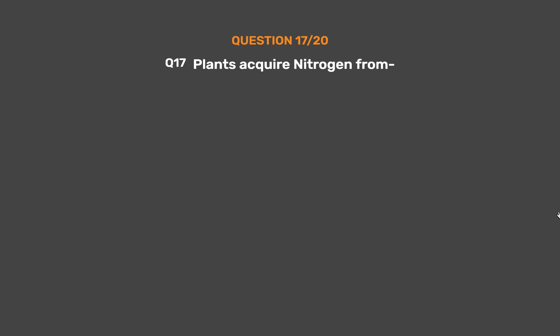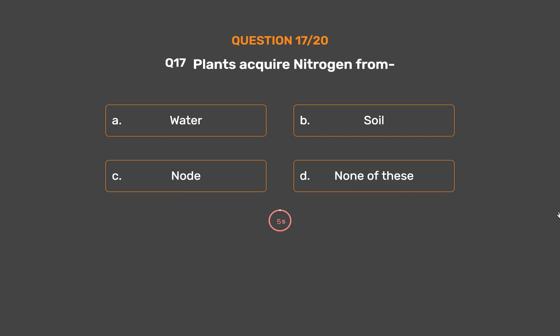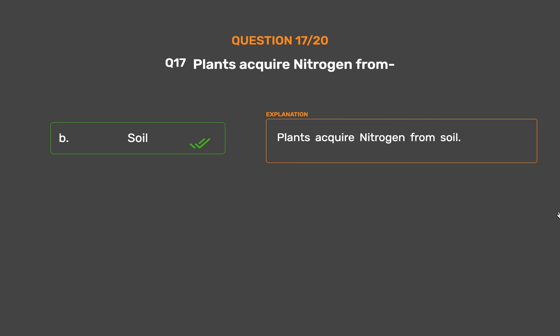Question No. 17. Plants acquire nitrogen from — Option A: Water. Option B: Soil. Option C: Node. Option D: None of these. The correct answer is Option B: Soil. Plants acquire nitrogen from soil.